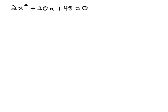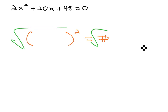In other words, making this equation into something squared equals some number, because that will be easy to solve by taking the square root of both sides.